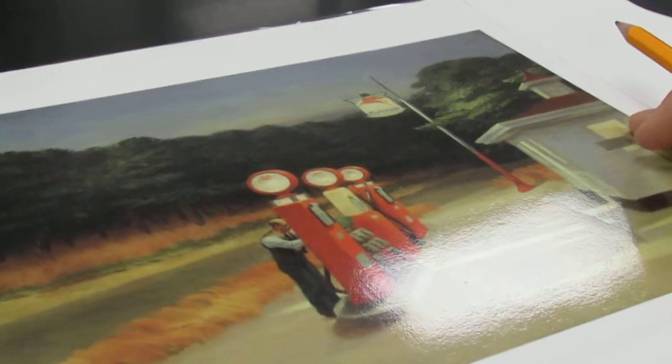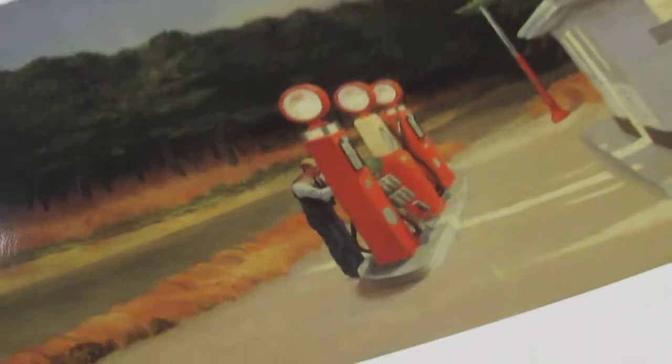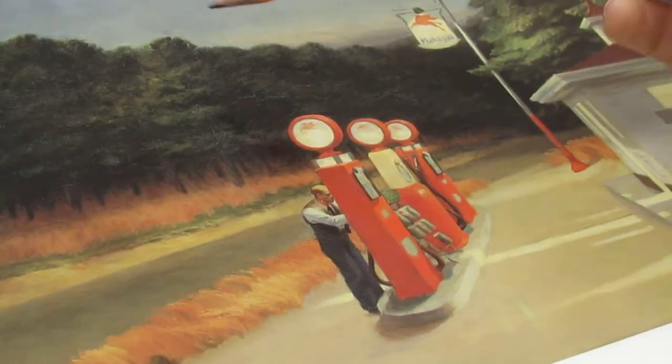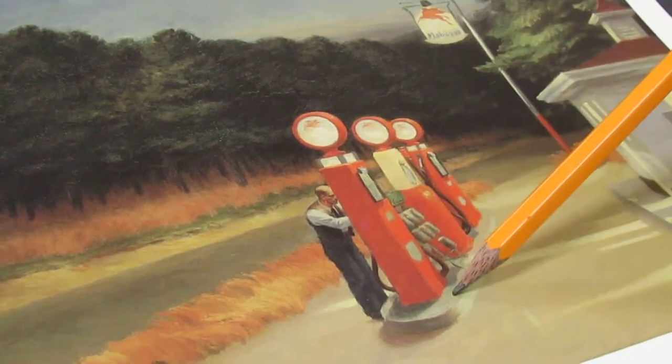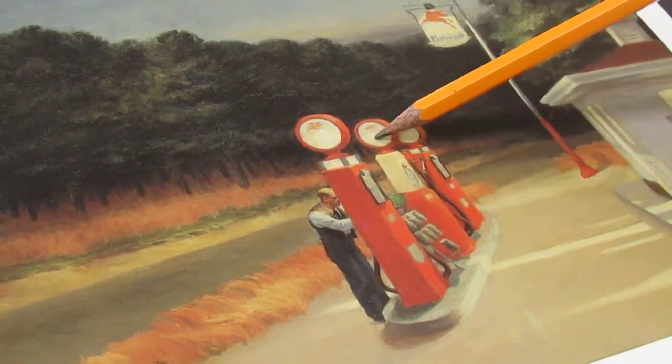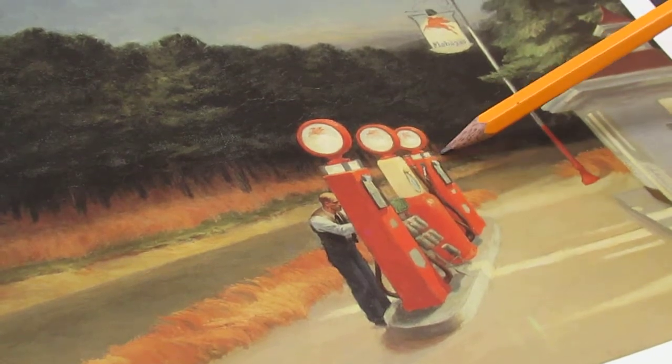If we take a look at a couple of artists here, this is a painting by Edward Hopper. With this one, you can tell that he wanted the gas tanks to appear closest to you, and as they get further away they get a little smaller, and then further away, even smaller.